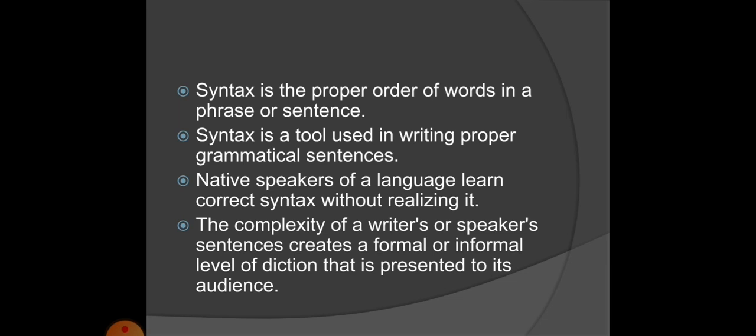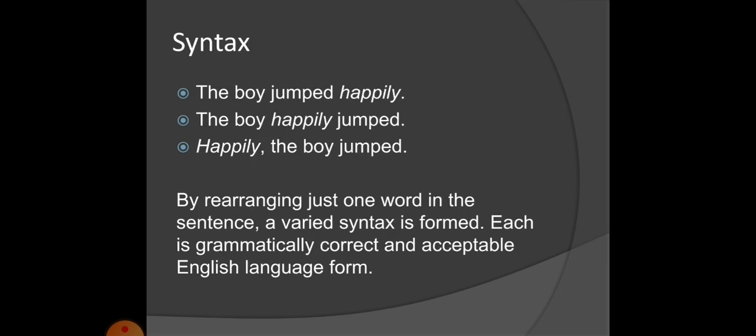From simple sentences to a wide range of complex utterances and complex written materials can be generated. For example: 'The boy jumped happily.' The second sentence is 'The boy happily jumped.' And 'Happily, the boy jumped.' All three are conveying the same meaning, but the syntactic pattern is different — the arrangement of the words is different.